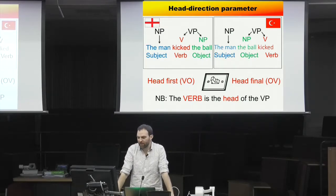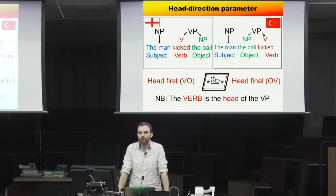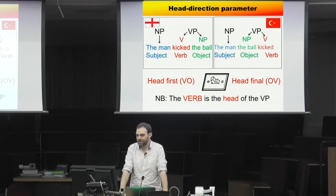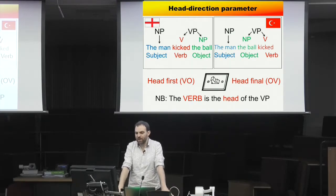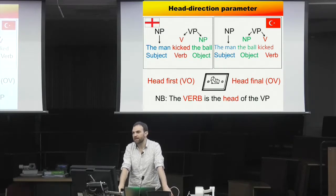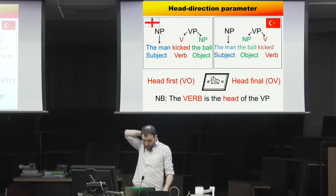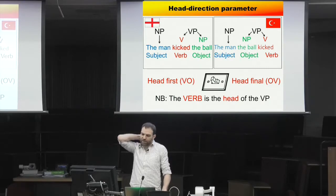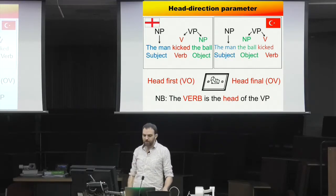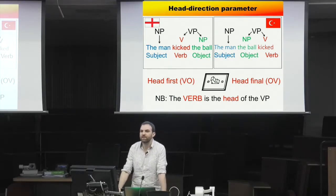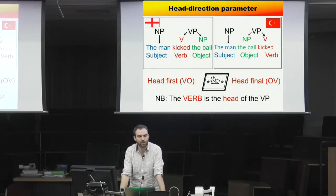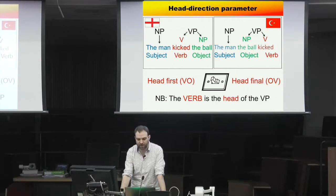One such parameter is the head-direction parameter, which reflects whether the head comes before or after the complement in the verb phrase. In English the head comes first — we say 'kick the ball' — whereas Turkish is head-final, so you'd say the equivalent of 'the man the ball kicked.' The idea is that you're born with this switch and set it to head-first or head-final on the basis of the language you hear.